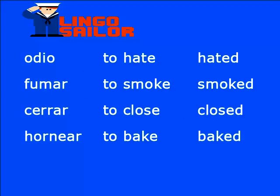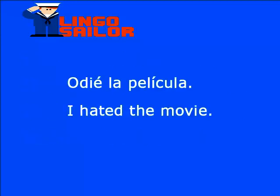Aquí tenemos más verbos: 'odiar' es 'to hate', pasado 'hated'; 'fumar' es 'to smoke', pasado 'smoked'; 'cerrar' es 'to close', pasado 'closed'; 'hornear' es 'to bake', pasado 'baked'. Una nueva palabra: 'película' es 'movie'. Odié la película — I hated the movie.